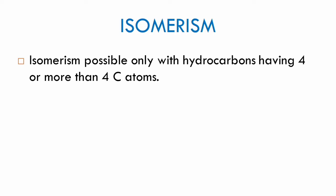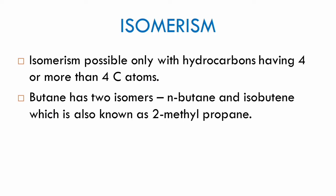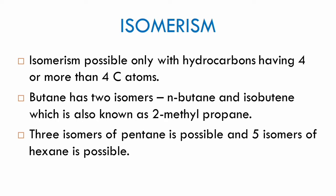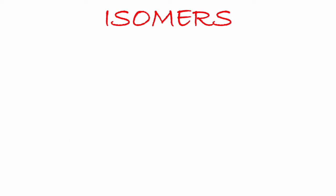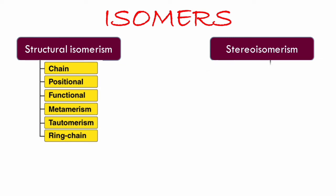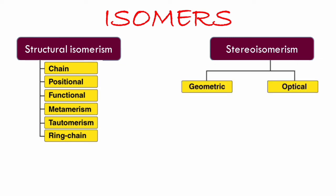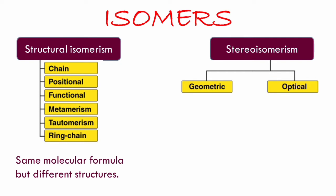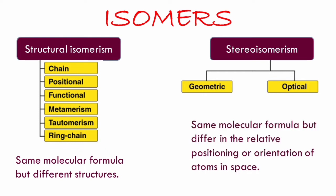For butane there are two isomers: n-butane and isobutane, also known as 2-methylpropane. For pentane there are three isomers. In the coming part of the video we will learn how to draw the isomers of butane and pentane. Isomerism in hydrocarbons can be classified into two types: structural isomerism and stereoisomerism. In structural isomerism, isomers have the same molecular formula but different structures, whereas in stereoisomerism, isomers have the same molecular formula but differ in the relative positioning or orientation of atoms in space.